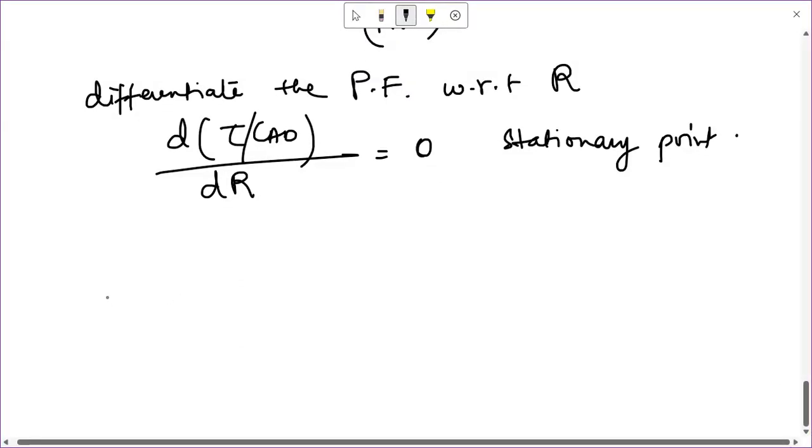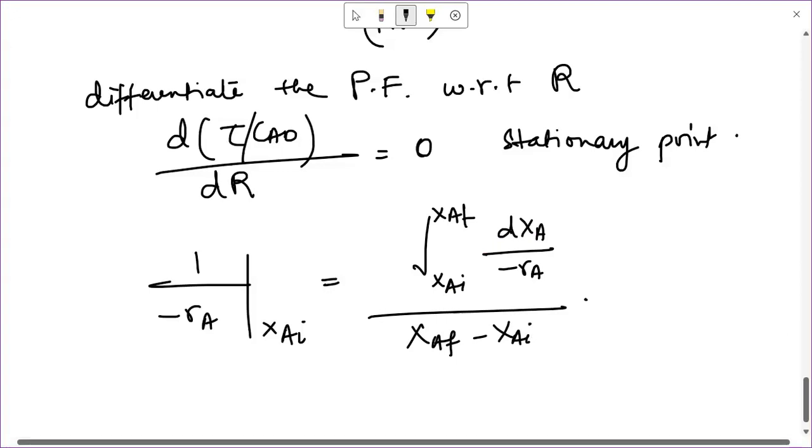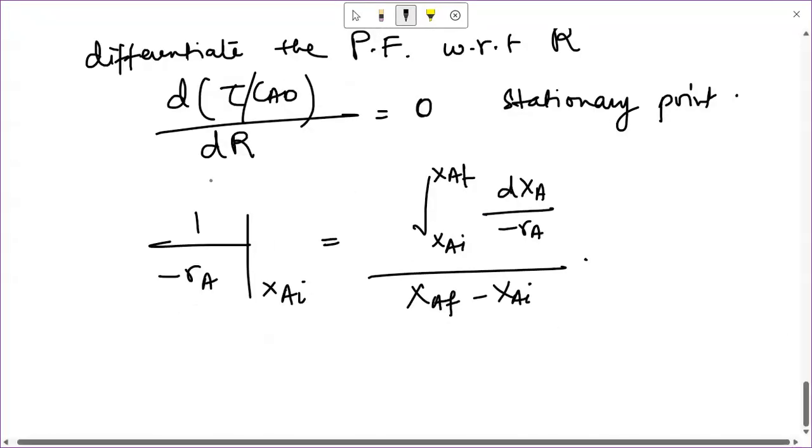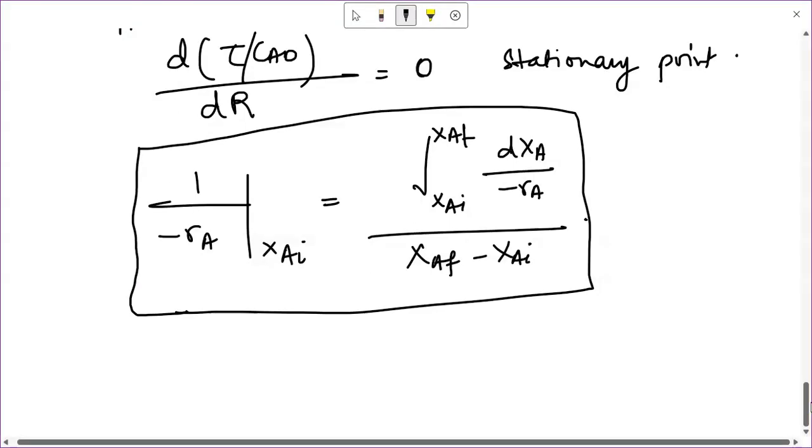Now without going into too much mathematical details, finally what you obtain is: 1 by minus rA at conversion xAi equals to the integration from xAi to xAf of dxA by minus rA, divided by (xAf minus xAi). So what does this mean? This means that the optimum recycle ratio introduces the reactor to such a feed whose 1 by minus rA value is equal to the average 1 by minus rA value of the entire reactor.